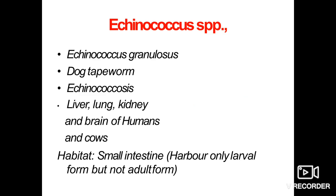Today we will discuss Echinococcus granulosus, also called dog tapeworm, dwarf tapeworm, or hydatid worm, that dwells in the small intestine and causes cystic echinococcosis, also known as hydatid disease.